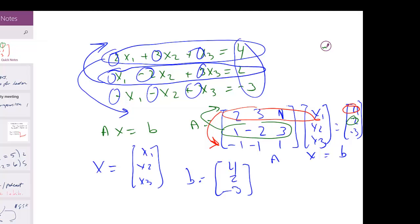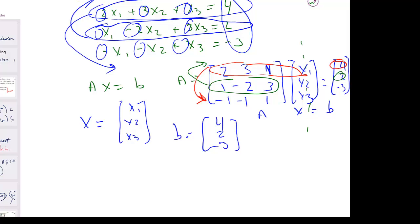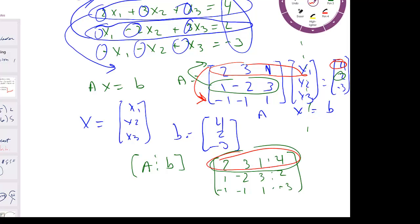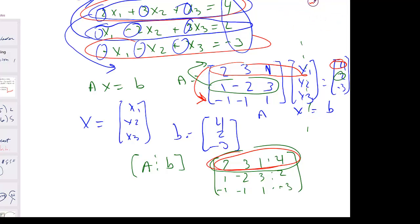When we talk about swapping rows, we're talking about the combined augmented matrix. The augmented matrix for Gauss elimination is [A|B]: [2, 3, 1, 4; 1, -2, 3, 2; -1, -1, 1, -3]. If we swap these rows, there's no difference — it doesn't matter how we write the three equations in three unknowns, there's no problem with that.